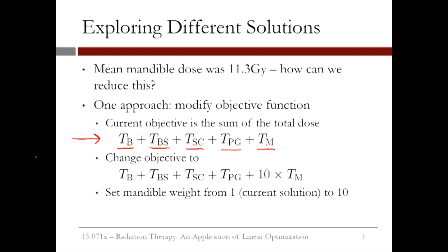We could instead change our objective to make the total dose to the mandible more important. This can be done by weighting the term for the mandible. By giving the mandible dose a weight of 10, the total dose to the mandible becomes 10 times more important in our objective than the total dose to the other critical structures.